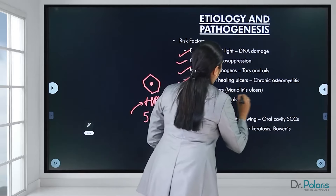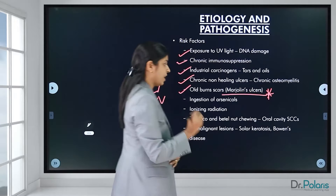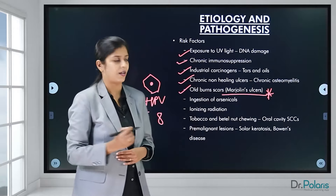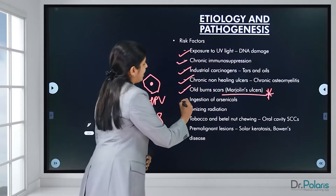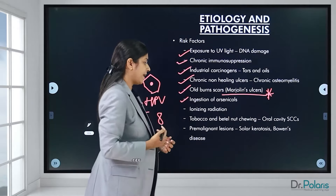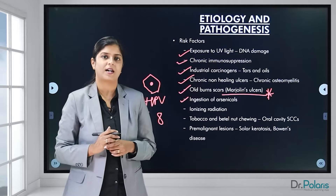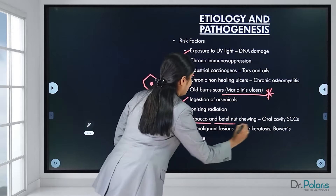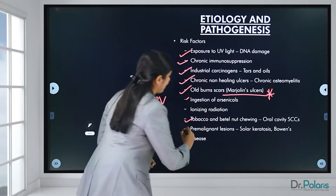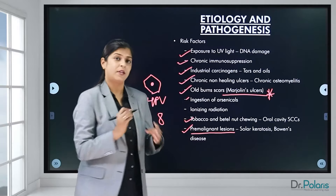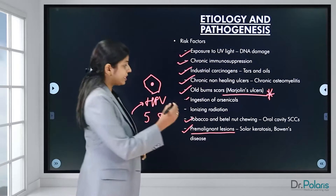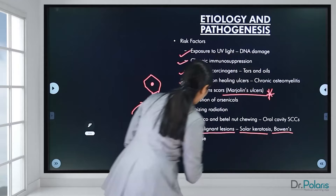Marjolin's ulcer is an important term — it refers to squamous cell carcinoma occurring in an old burn scar. Ingestion of arsenicals can irritate the mucosa and give rise to squamous cell carcinoma. Other risk factors include ionizing radiation. For oral cavity squamous cell carcinomas, chewing tobacco and betel nut increases risk. Premalignant conditions such as solar keratosis and Bowen's disease also increase the risk if not treated.